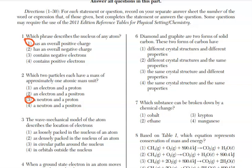For number 3, the wave mechanical model of the atom describes the location of electrons. They are in orbitals outside of the nucleus. It is an important vocabulary word that you need to remember.